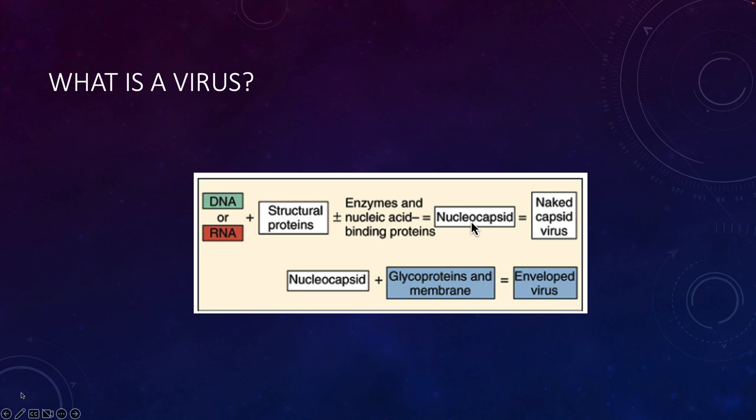A virus is essentially some nucleic acid plus structural proteins, plus or minus any extra factors it wants to bring along. When you combine the nucleic acid with the structural proteins, that is called a nucleocapsid. For naked viruses, that's basically what they are. For enveloped viruses, they have the nucleocapsid plus glycoproteins and a membrane — generally derived from host cells.